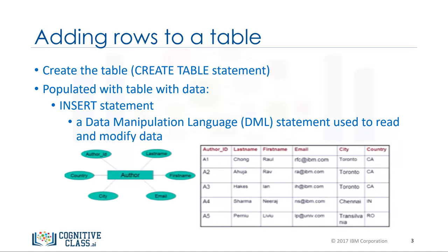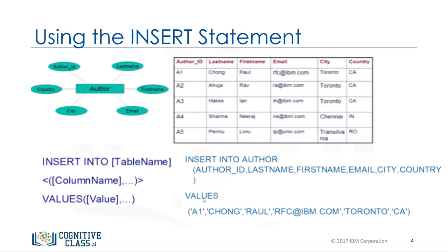Based on the author entity example, we created the table using the entity name 'author' and the entity attributes as the columns of the table. Now we will add data to the author table by adding rows to it using the INSERT statement.